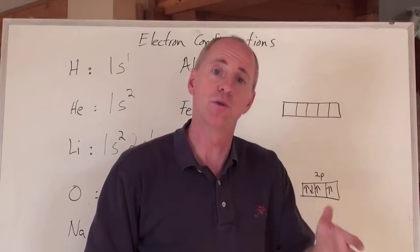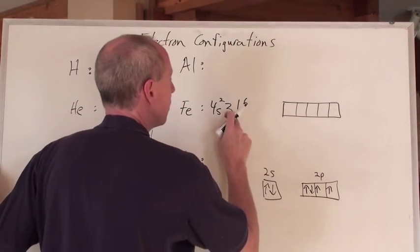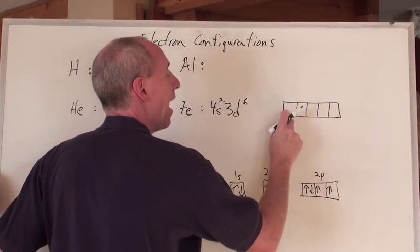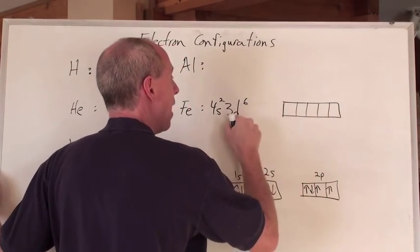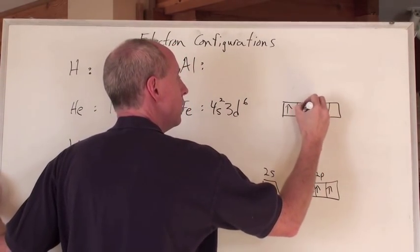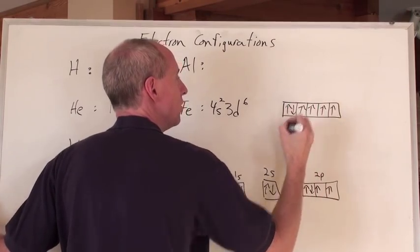There, you can have 3d orbitals, 3d orbitals, you can have, the 3d, you can have 5 sub-orbitals. How do you put those 6 electrons in? 1, 2, 3, 4, 5, and then 6.